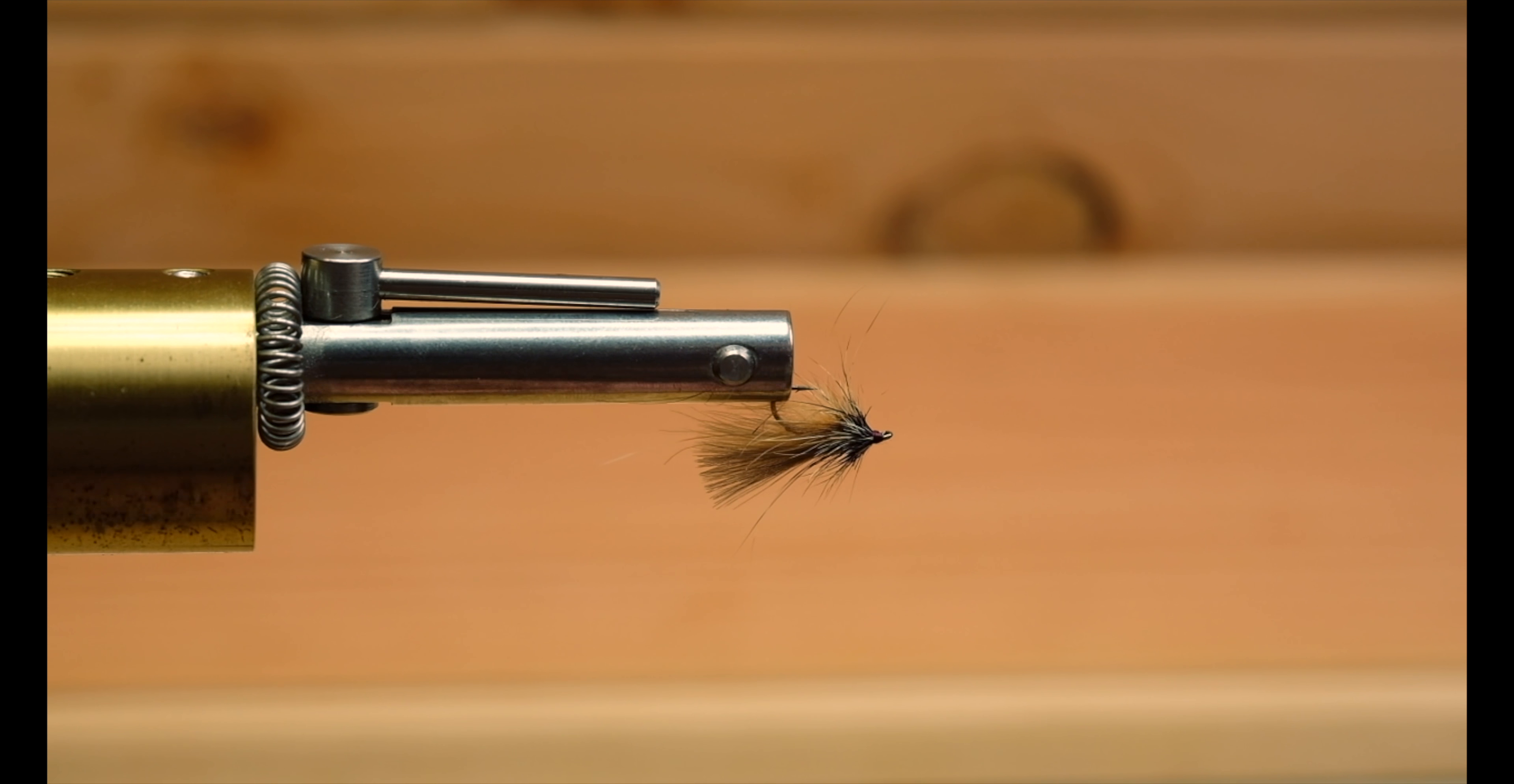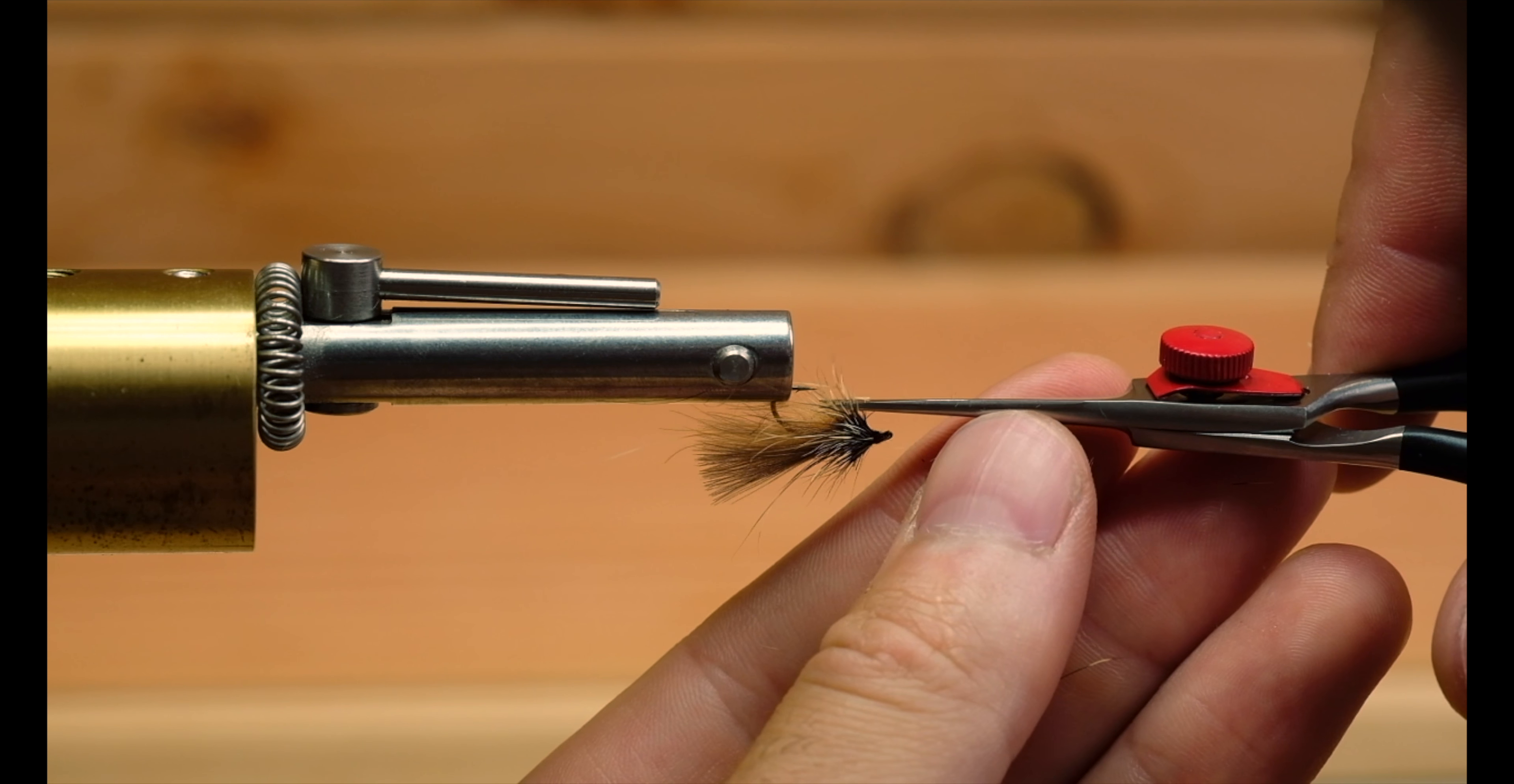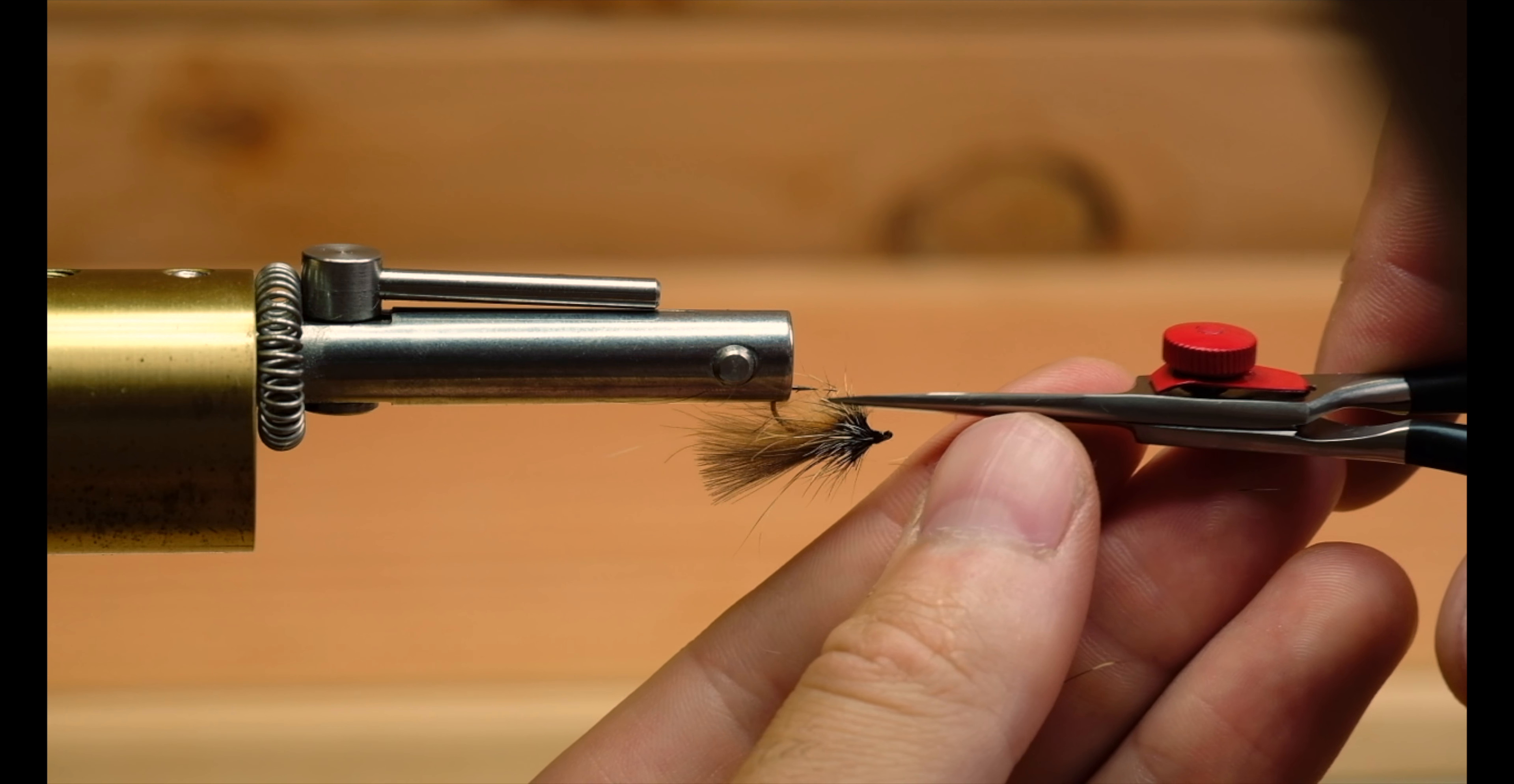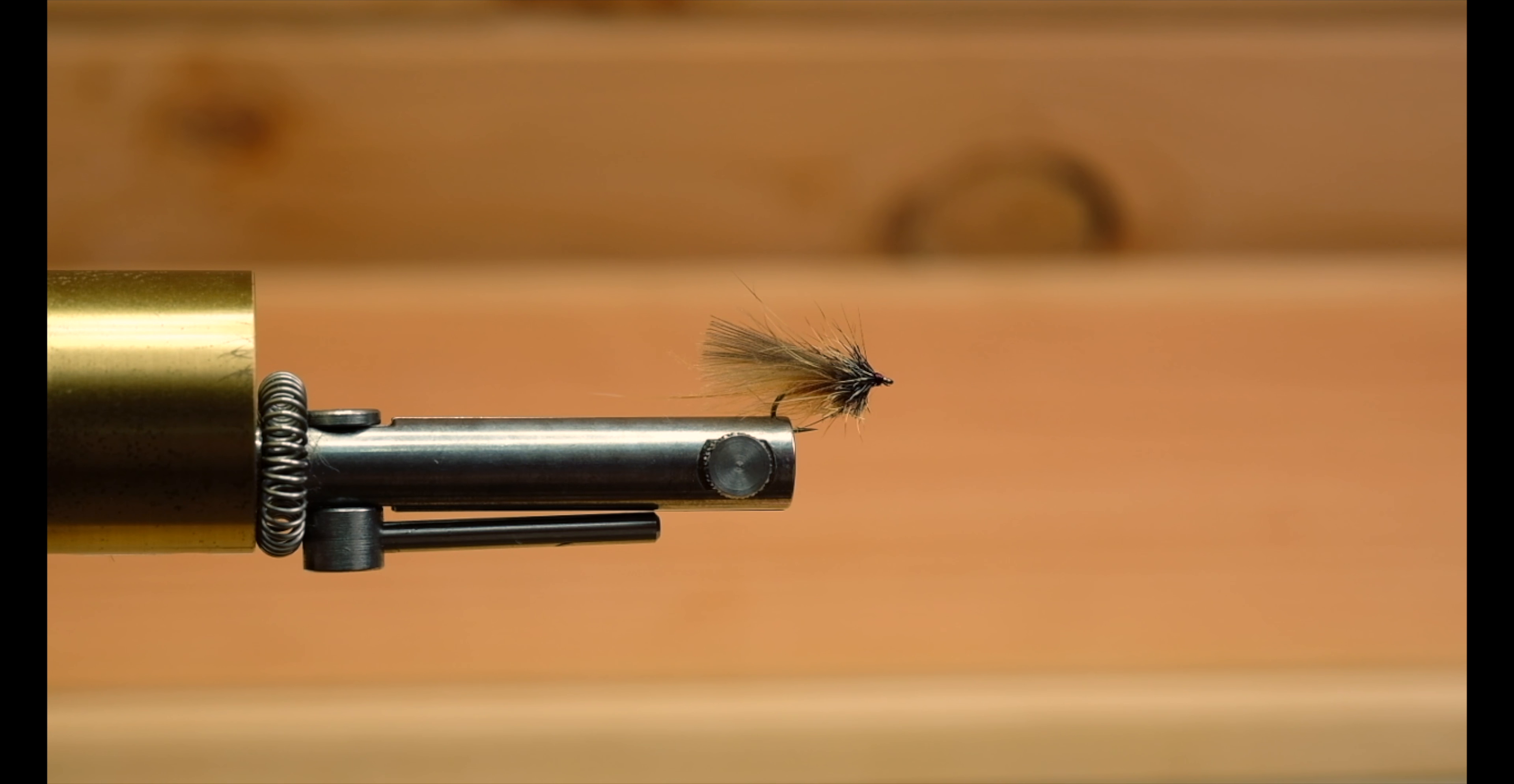The last thing we have to do is trim here on the bottom. Just with your scissors create a little V so that the fly will float low, and we're done. It's my favorite caddis pattern, the cinnamon caddis. Thanks for watching. If you like our videos, please don't forget to subscribe and give us a thumbs up. Check us out next time.